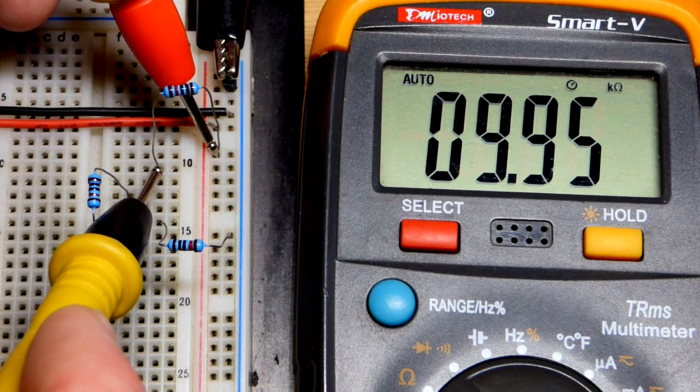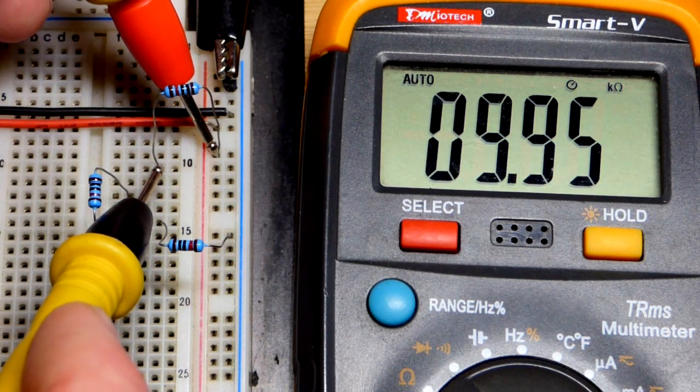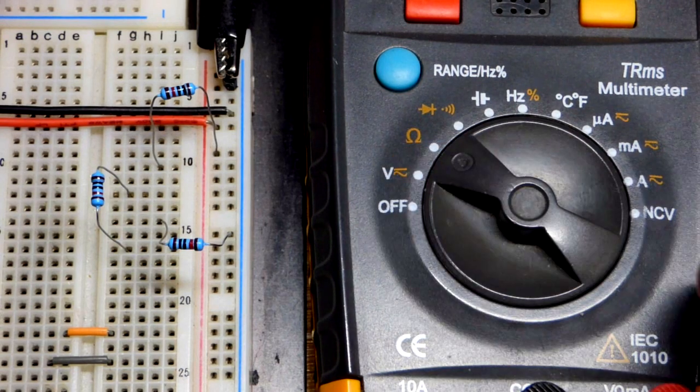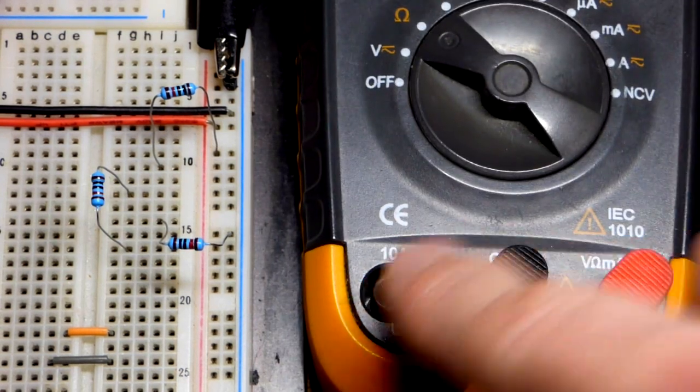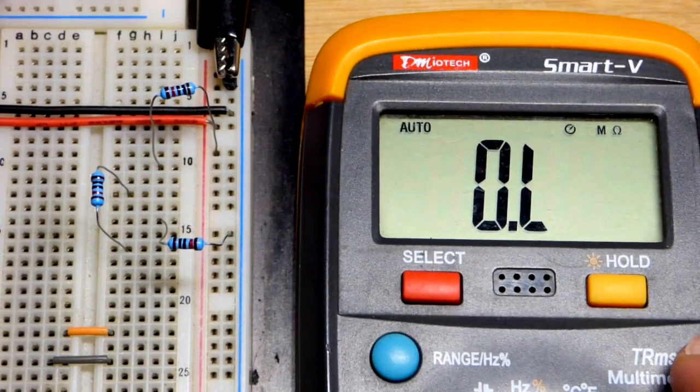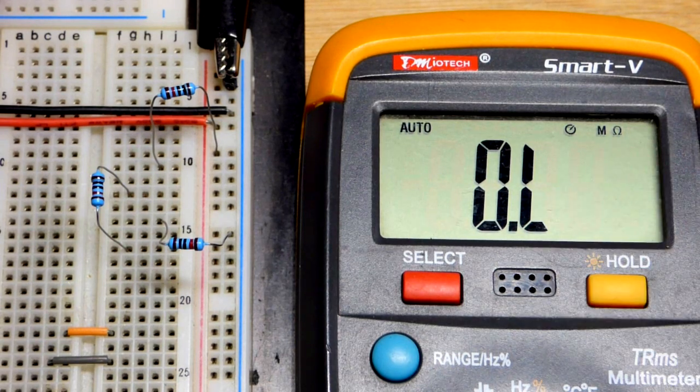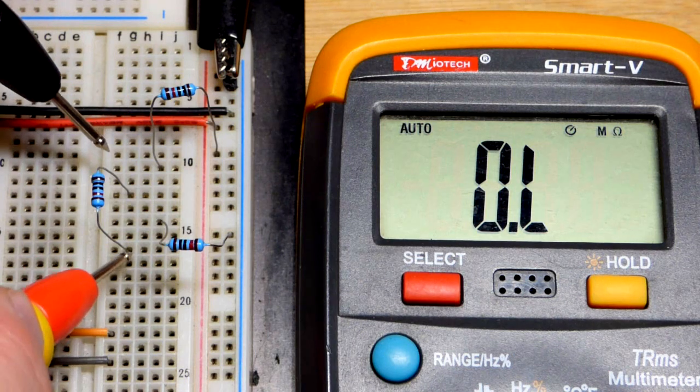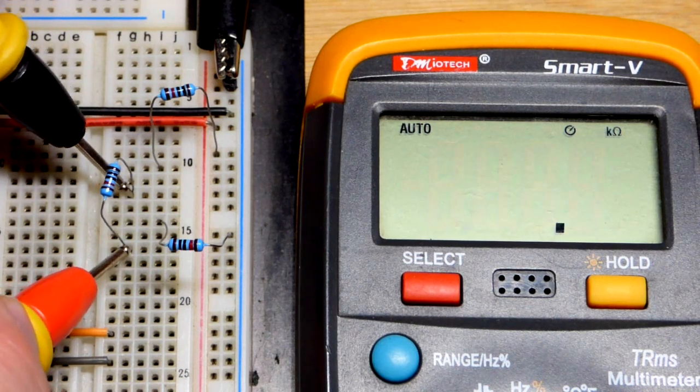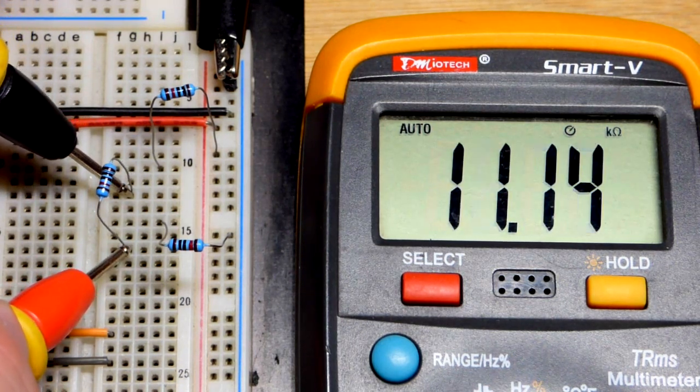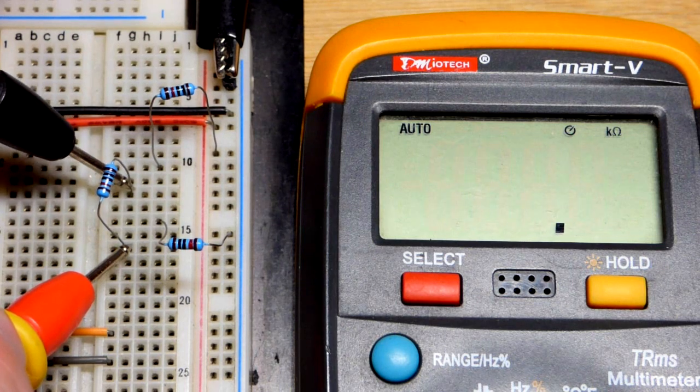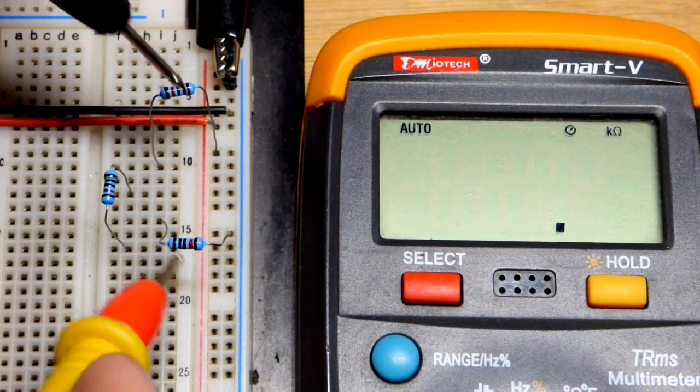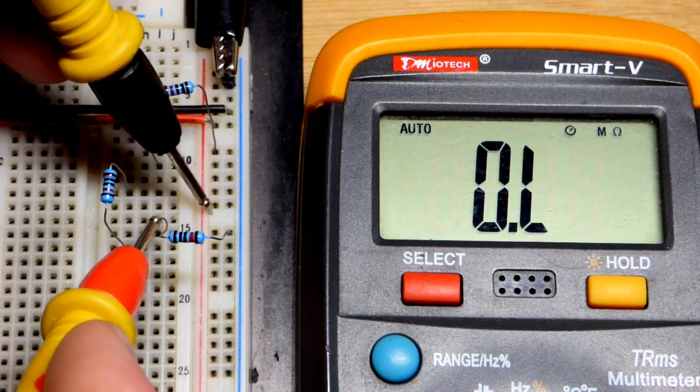We have ten thousand ohms of resistance. This is an auto-ranging meter, I just have to set it to measure resistance. It says 9K, that's the same as nine thousand ohms. Polarity doesn't matter when it comes to measuring resistance. When you measure a voltage, if you get the probes backwards you just get a negative voltage, no big deal. It looks like just shy of ten thousand ohms.